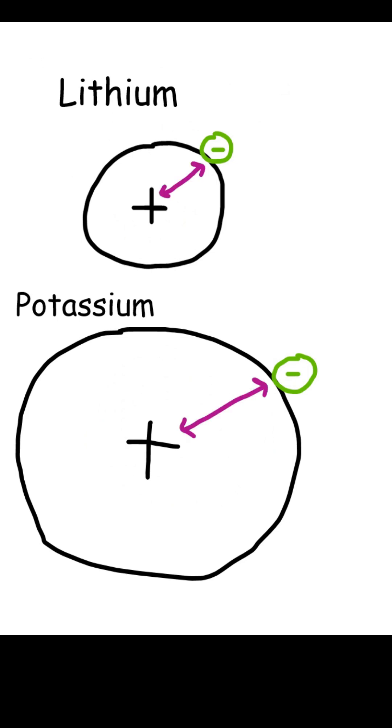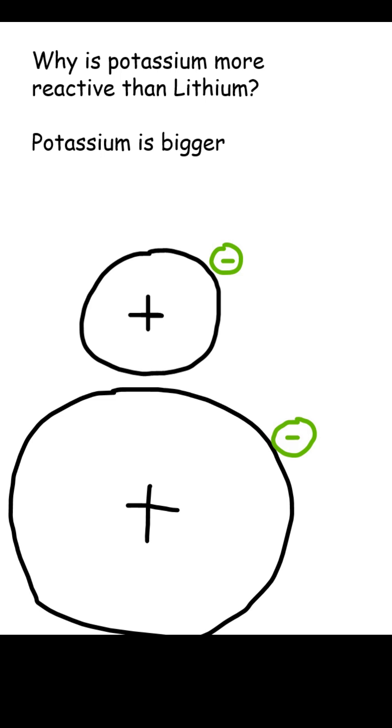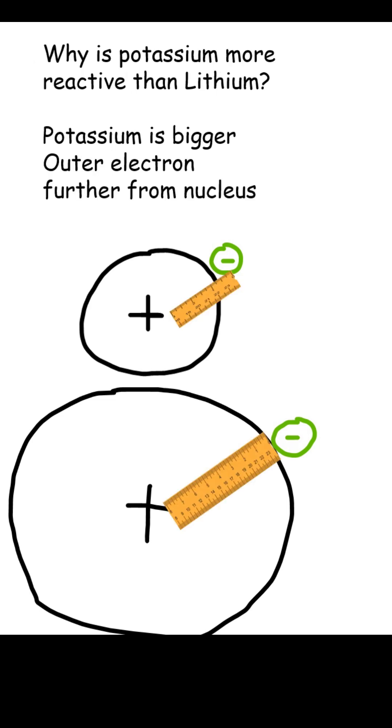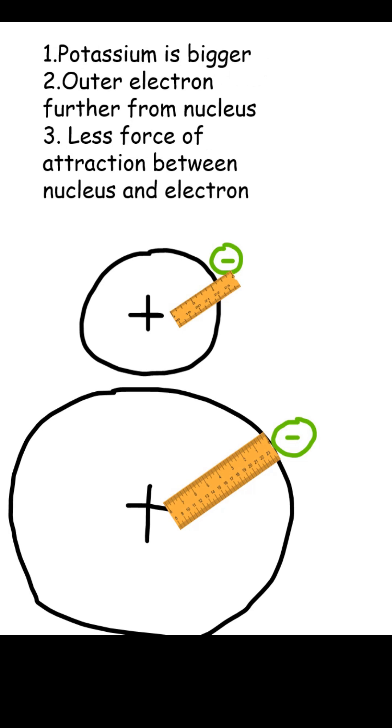What's the difference between lithium and potassium? Potassium is bigger. This means the outer electron it wants to lose is further from the nucleus so there's less force of attraction between the negative electron and positive nucleus. This means the outer electron is easier to remove and that's why as we go down the group the elements become more reactive.